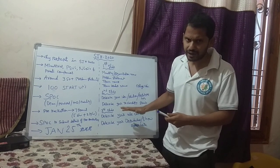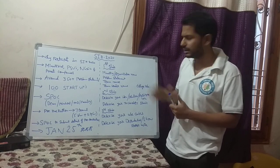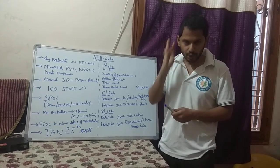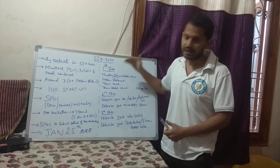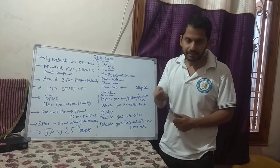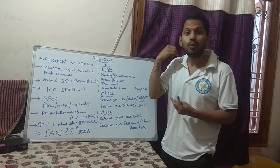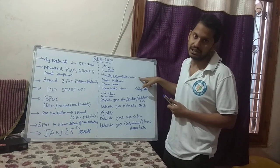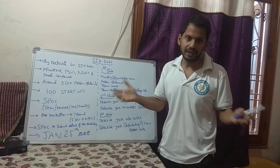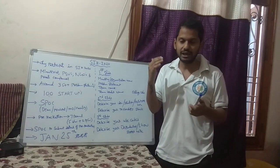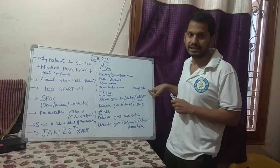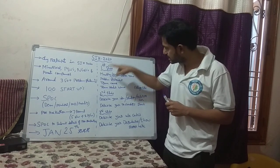This is the common structure given by the SIH team. The proposal should consist of three slides — you can add one or two more if needed, but it is not advisable. Fit your proposal in three slides. The first slide should include: the ministry or organization name that gave the problem statement, the problem statement name, your team name — with no college name in the team name — the team leader's name, and your AICTE college code.